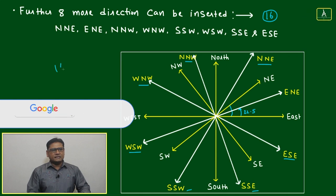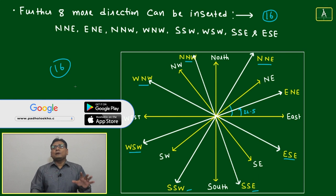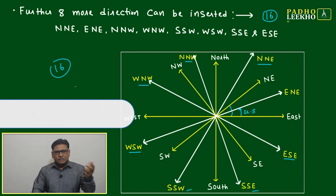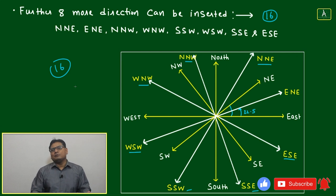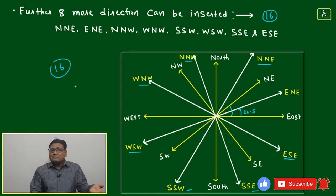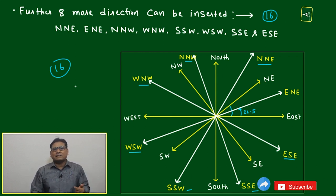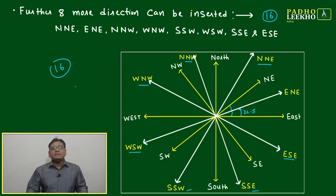These 16 directions are standard, but from an aptitude exam point of view, the 8 directions we discussed earlier are what matter most. A valid question arises: why are the other directions not asked in most aptitude exams? The main reason is that once directions like east-north-east or north-north-east are involved, angles come into play that are no longer 45°.